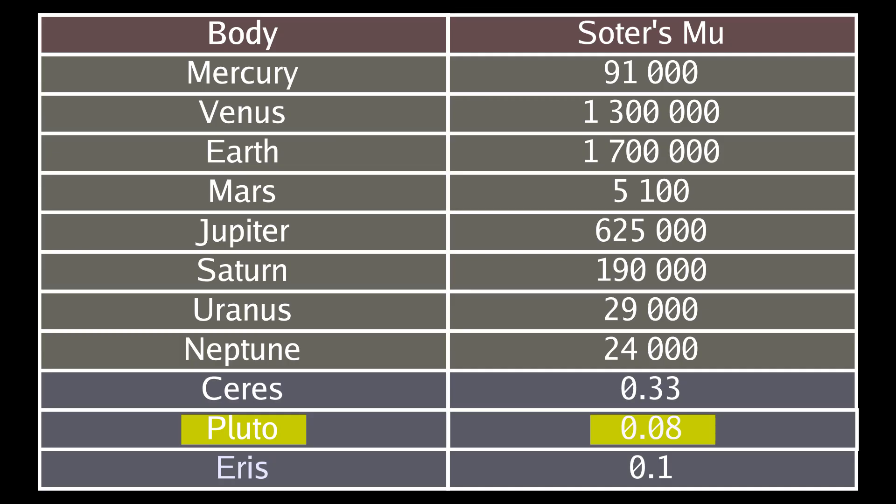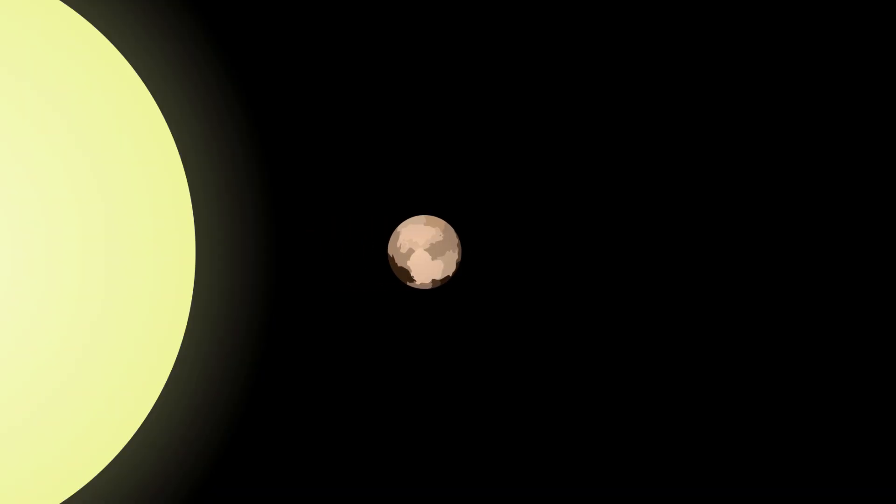If you calculate the planetary discriminants for each object in the solar system, the eight objects we consider planets have enormous planetary discriminants, meaning they are far more massive than anything in their orbits. Pluto's planetary discriminant is extremely small by comparison. So Pluto is not a planet? Well, I have a problem with this definition.